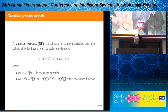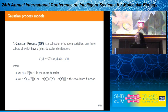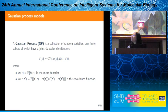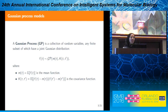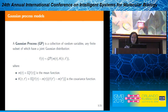We model the time series using Gaussian process models. Gaussian process models are Bayesian non-parametric methods that are very useful for short and sparsely observed time series. A Gaussian process is a collection of random variables, any finite subset of which has a joint Gaussian distribution. It is defined by the mean and covariance function, and the most important part is the covariance function because it allows us to model temporal change and encode assumptions like smoothness or length scale.